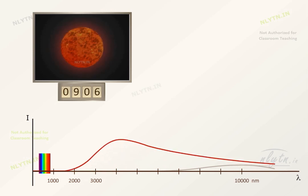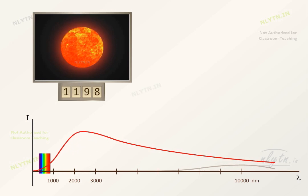At around 1100 kelvin, the wavelengths in the red region have sufficiently high intensity. And that is why the object appears to be red around this temperature.